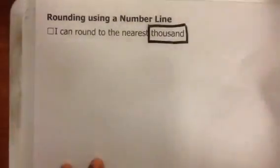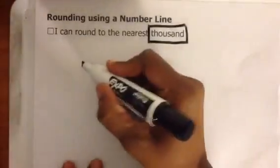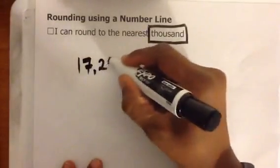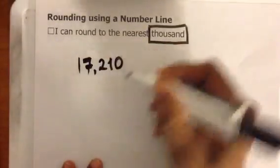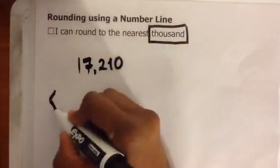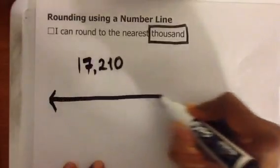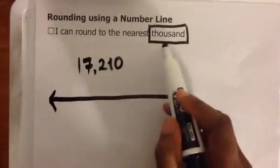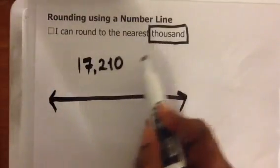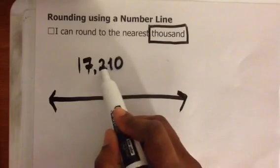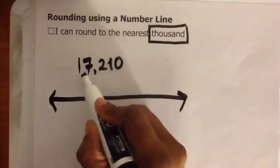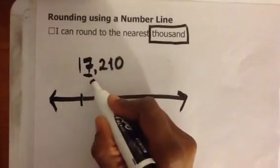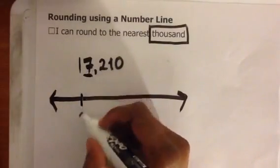Let's start. Let's round 17,210 to the nearest thousand. I'm going to use a number line. I need to find my place value that I'm rounding to the nearest thousand. Ones, tens, hundreds, thousands. There's a 7 in my thousands place.